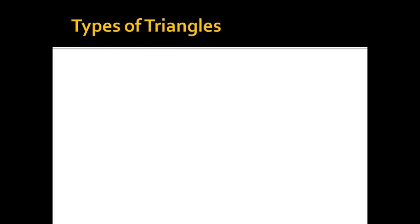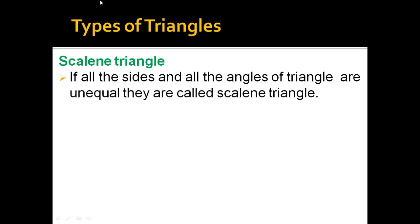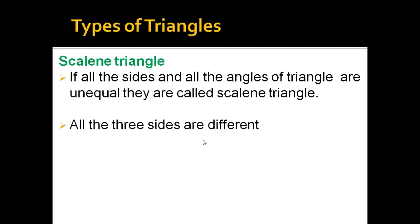The third type is the scalene triangle, which is exactly opposite to an equilateral triangle. In a scalene triangle, all sides and all angles are unequal. For example, the three sides might be 4 cm, 5 cm, and 6 cm — all different. Such a triangle is known as a scalene triangle.